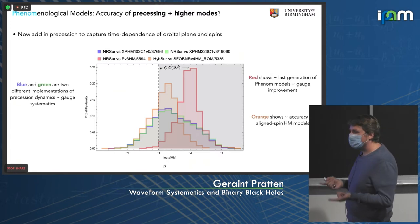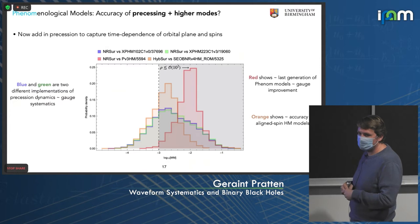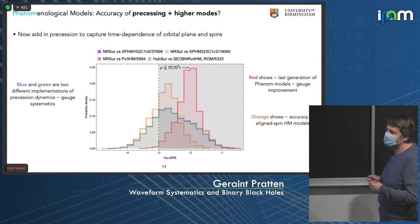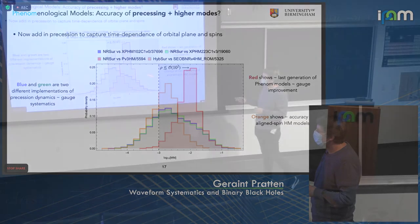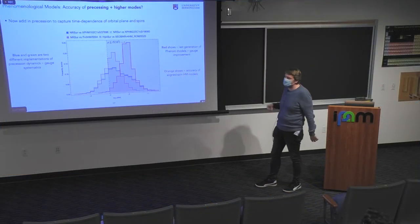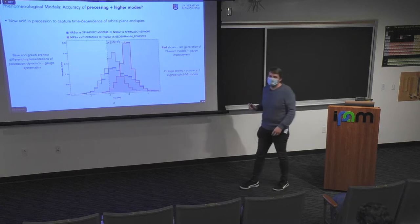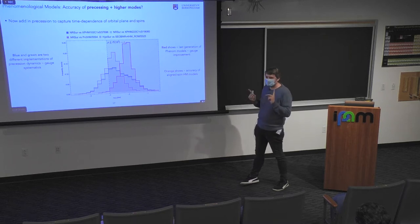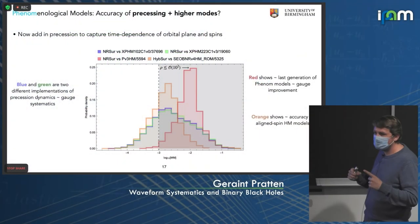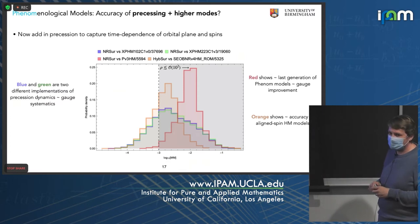Once we include precession and higher modes, we have to account for the full two-sphere and optimize over polarization as well, so we become sensitive to binary geometry. Looking at histograms comparing the NR surrogate against PhenomXPHM with two different prescriptions for the precession dynamics, we find that actually the precession prescription isn't a major source of error in waveform models. So the error comes from perhaps different aspects of the model.